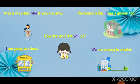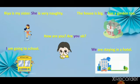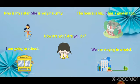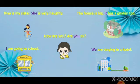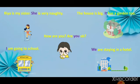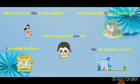Now we will see a few examples. 'Ria is my sister. She is very naughty.' In this sentence, she is the pronoun because it is replacing the noun Ria. The next is: 'The house is big. It has a garden too.' In this sentence, it is the pronoun because it is replacing the noun house.